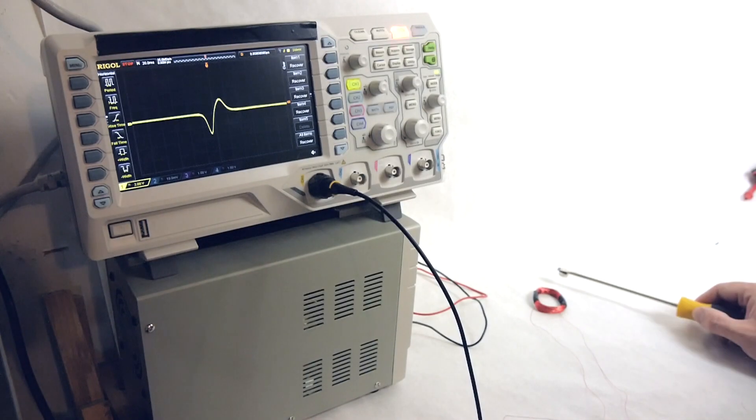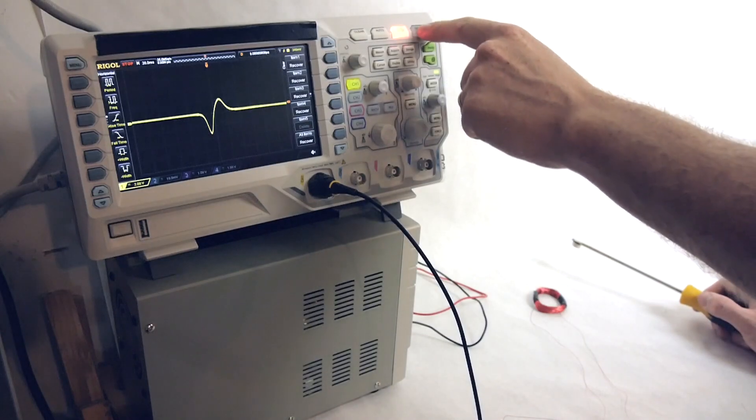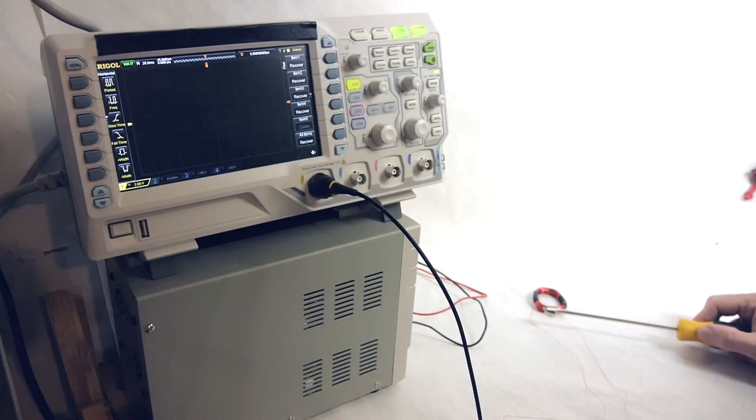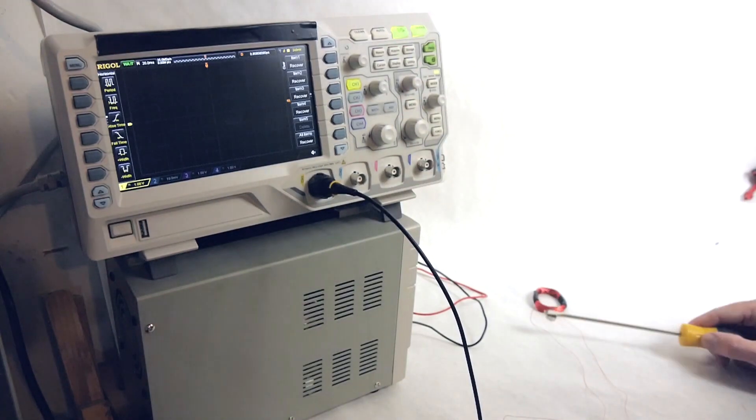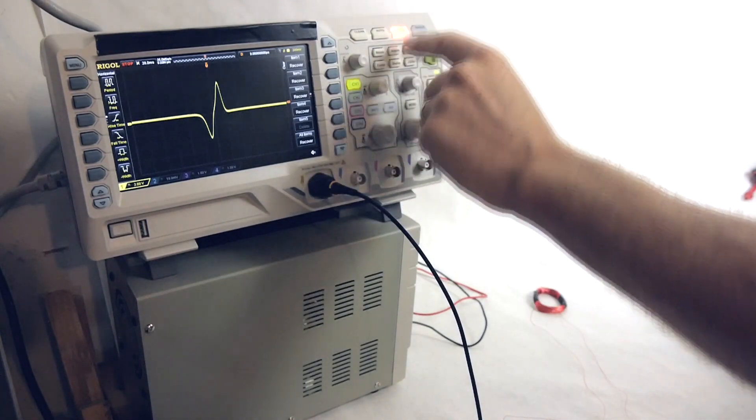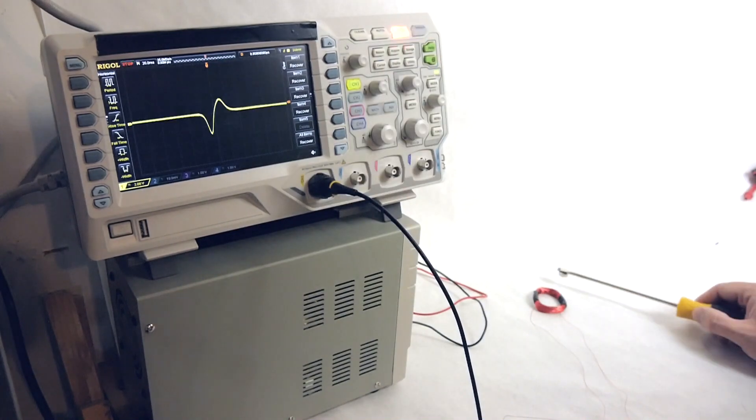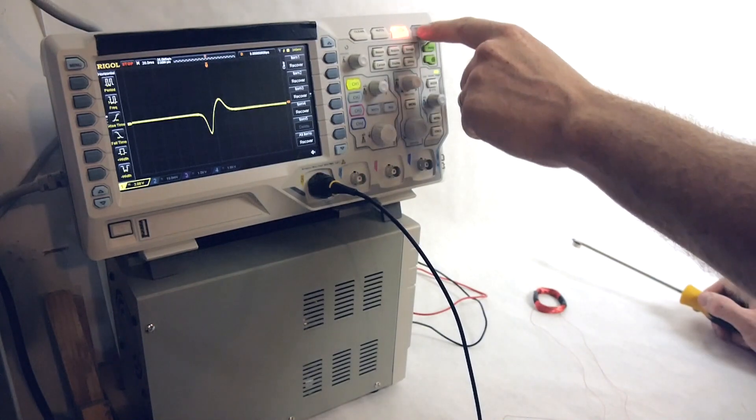If I keep the conductor still within the magnetic field, nothing happens. But as soon as I move the magnet, we see a spike in voltage. This is the electromotive force, or EMF, in Faraday's law. The faster the coil passes through the magnetic field, the higher the voltage spikes, demonstrating that the EMF is proportional to the velocity.